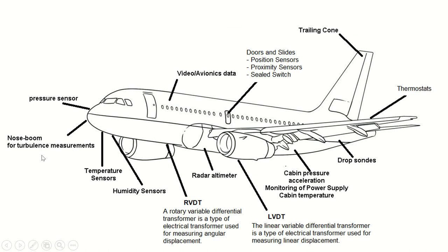We have something called a nose boom, used for turbulence measurement. When you fly at 35,000 feet, if the temperature and climate conditions go bad, you will have turbulence. The turbulence has to be measured, and this nose boom helps you in measuring it.